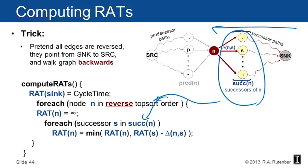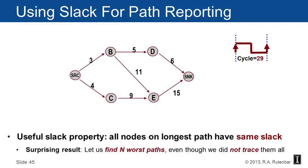A surprising and cool result: you can use slack for path reporting. The key slack property is that all nodes on the longest path have the same slack. This lets you find the N worst paths without tracing them all — you can enumerate them one at a time in order with a really easy algorithm.